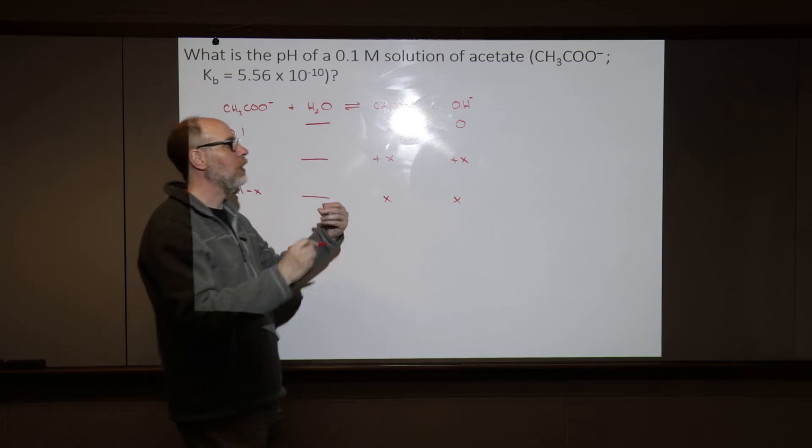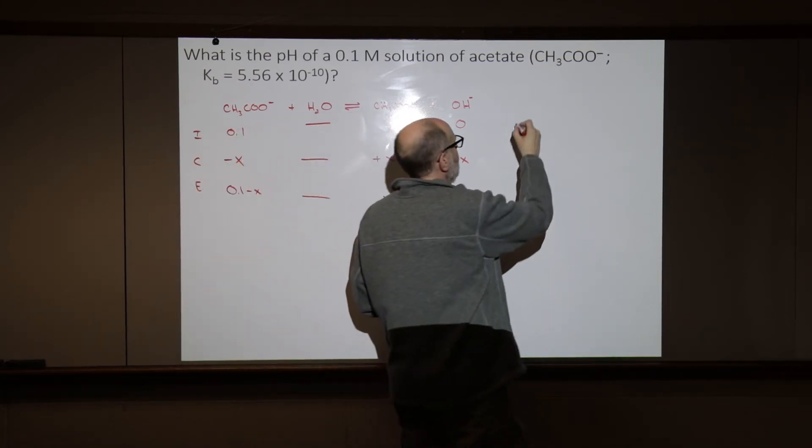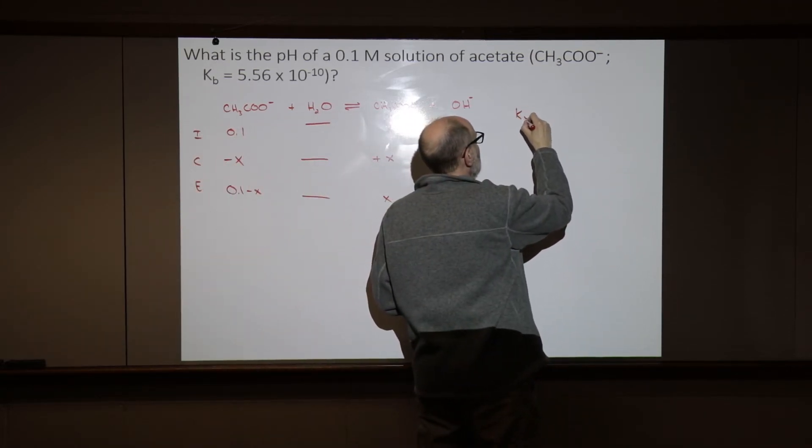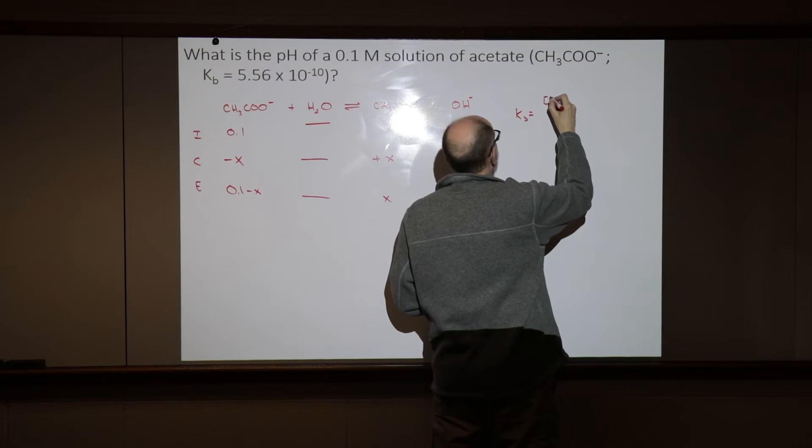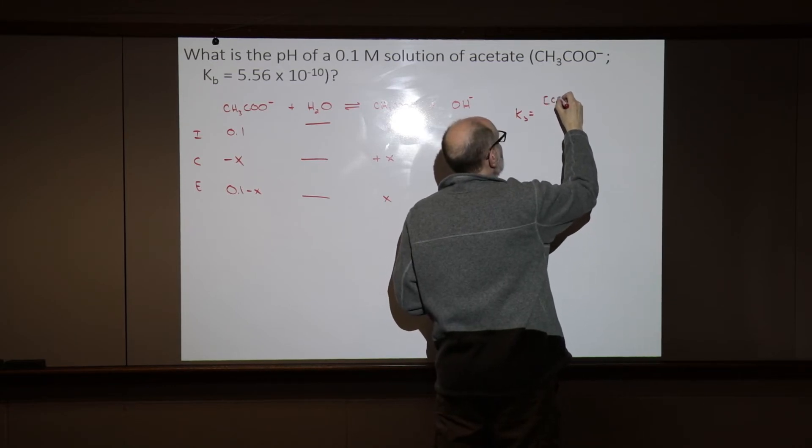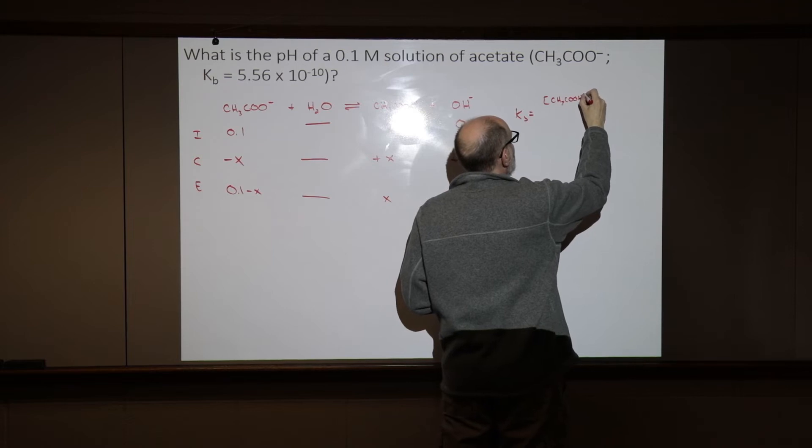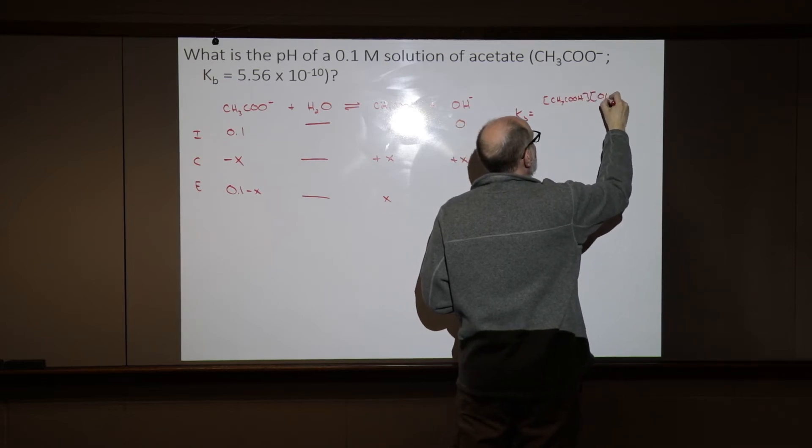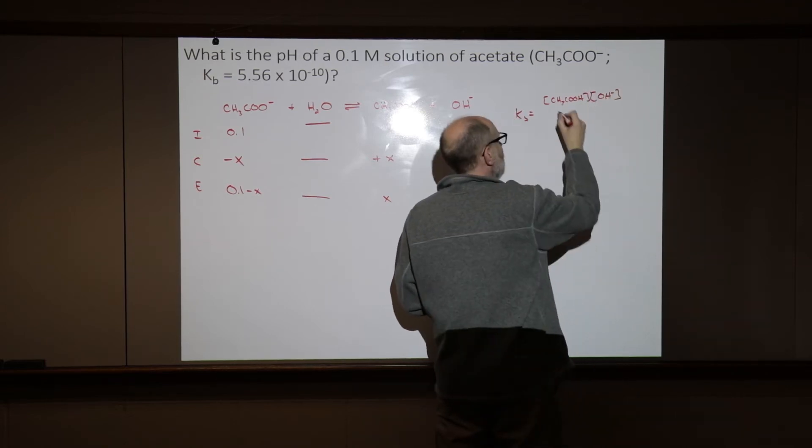Equilibrium concentrations, we can now go and write that equilibrium expression. So KB equals concentration of acetic acid at equilibrium, concentration of hydroxide ion at equilibrium,